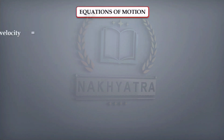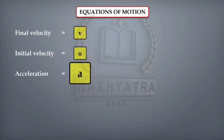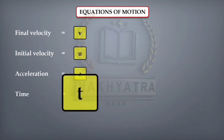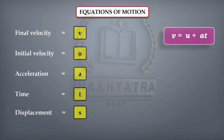As you already know, we will denote the final velocity as V, initial velocity as U, acceleration as A, time as T, and displacement as S.